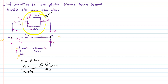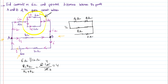So instead of the 6 ohm and 12 ohm resistors, we can write 4 ohms. Drawing the equivalent circuit, we have 4 ohms instead of 6 and 12, then another 4 ohms, an 8 ohms resistor, a 2 ohms resistor at the bottom, and a 60 volt battery.